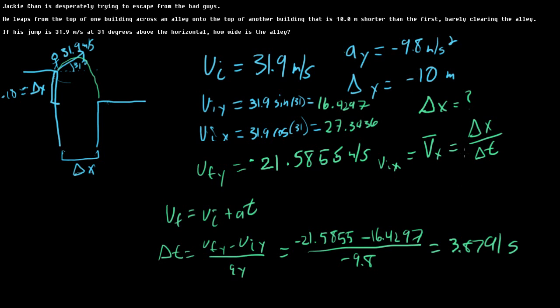Now, we just said that if we had delta t, we could find x, so put that over 1, cross multiply, we get delta x equals vx delta t. We have both of those.